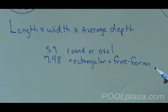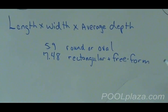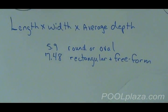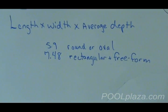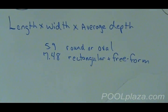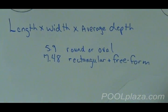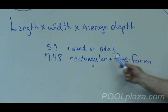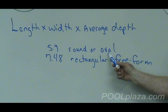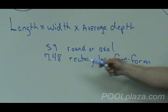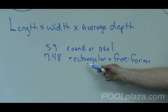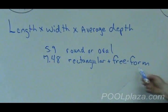Length times width times average depth, and then take that number and multiply it either by 5.9 if the pool is round or oval, or 7.48 if the pool is rectangular or freeform.